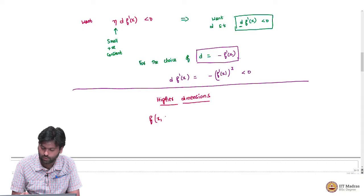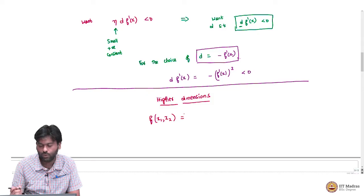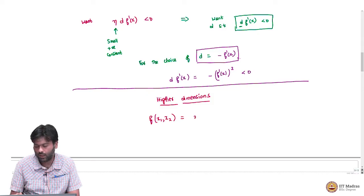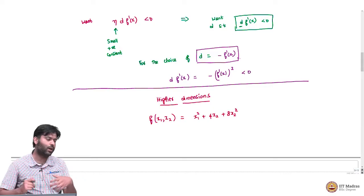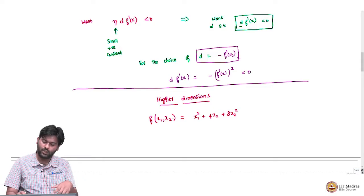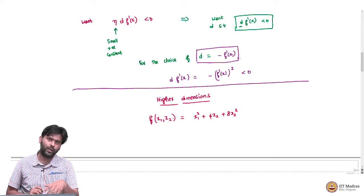For example, the function could be of the following form: f of x1 comma x2 could be something like x1 squared plus 4x2 plus 8x2 squared. So it could be some arbitrary function which depends on two variables.